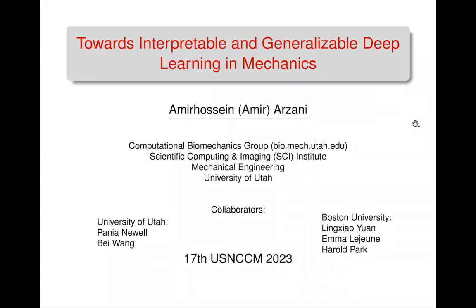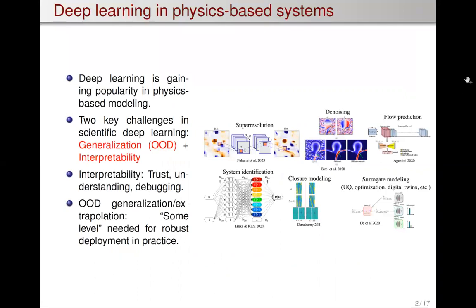I will present about interpreting and generalizing deep neural networks in scientific machine learning. As we all know, deep learning has become really popular these days in different scientific computing tasks, whether that's increasing the quality of the data, making predictions, or just inside-the-loop calculations like uncertainty quantification or optimization.